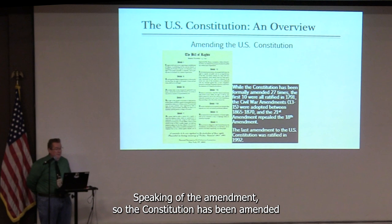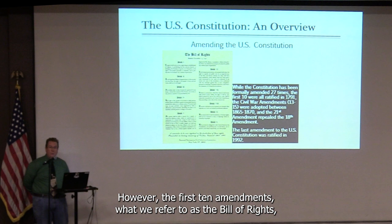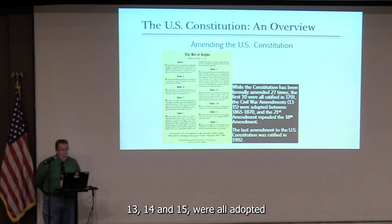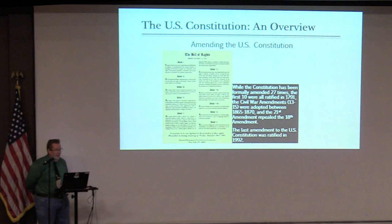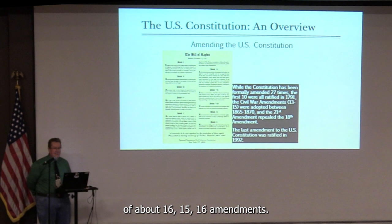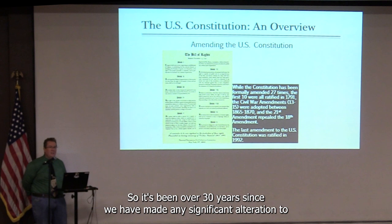The Constitution has been amended formally 27 times. However, the first 10 amendments — the Bill of Rights — were all ratified in 1791. The Civil War Amendments, numbers 13, 14, and 15, were adopted between 1865 and 1870. The 21st Amendment repealed the 18th, the Prohibition Amendment. Adjusting for that, you get down to roughly 15 to 16 substantive amendments. The last amendment ratified was the 27th, passed in 1992 — so it has been over 30 years since any significant alteration to the Constitution.